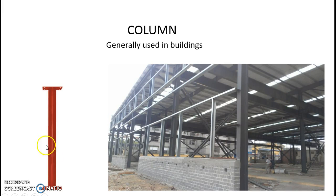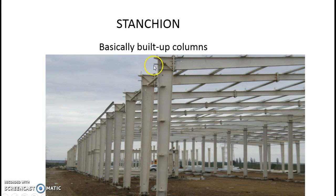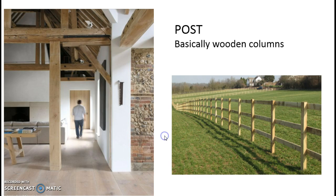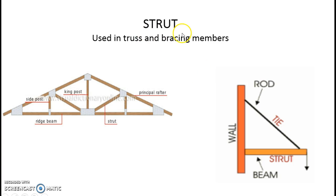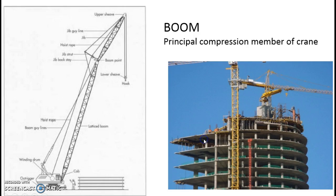Some examples: this is the circular hollow column, and this is the I-section column or stanchion. There are also built-up columns. A post is basically a wooden column used in old buildings as well. Some members of a truss — like the principal rafter — are always compression members. A strut is also a part of a truss and is always a compression member.